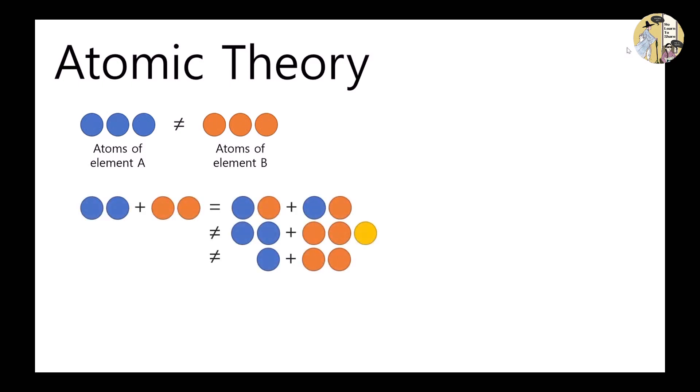Second, atoms move from a substance to another in an ordinary chemical reaction, but no atom of any element disappears or changes into an atom of another element. Third, compounds are formed when atoms of two or more elements combine. We can define the atom as the smallest particle of an element that can enter a chemical reaction.